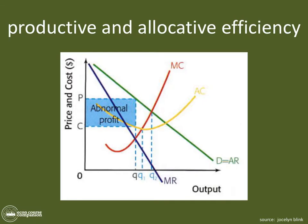Now we have to think about what productive and allocative efficiency mean. Productive efficiency is the level of output that a firm would operate at if it were trying to use all of its resources as productively efficient as possible. That point is not going to be Q — it is not going to be at the level of output that maximizes profits, because that level is not where average cost is the lowest.